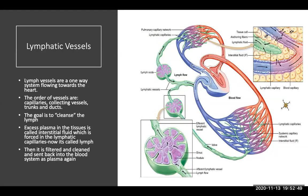Lymphatic vessels will be a one-way system flowing always towards the heart. The order of vessels are capillaries, collecting vesicles, trunks, and ducts, and the goal is to cleanse and filter the lymph so that it can get back into the superior vena cava into the right atrium. Excess plasma in the tissues is called interstitial fluid, which is forced into the lymphatic capillaries where it's called lymph, and then it will be filtered, cleaned, and sent back into the blood system as plasma again.